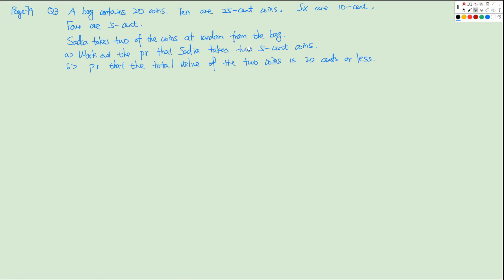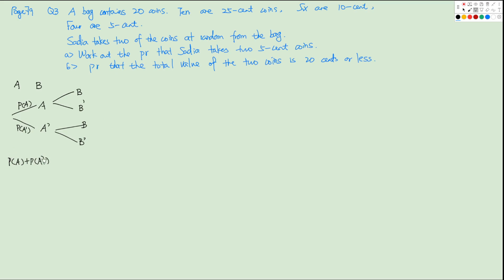A tree diagram is used to represent information about consecutive events. If we have event A and then event B, we can think about two situations: event A has occurred, and event A hasn't happened. Under the event that A has happened, we have B happens or B hasn't happened. And similarly under A hasn't happened. Here, P(A) plus P(A') equals 1.